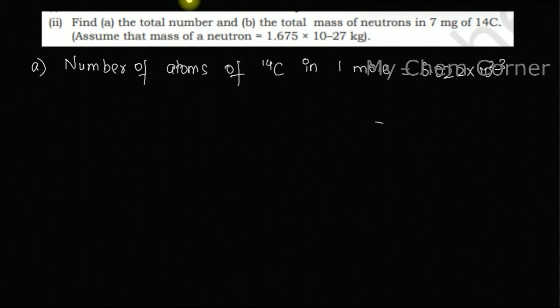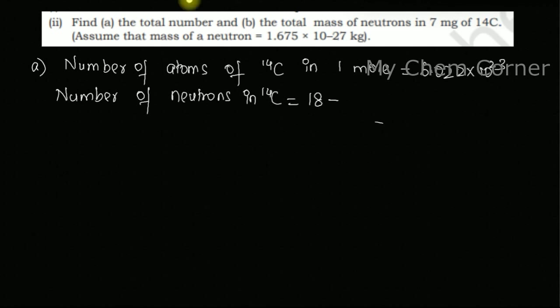Now, the number of neutrons in Carbon-14 — the atomic mass is 14, and carbon's atomic number, or number of protons, is 6. So when I subtract: 14 minus 6, I get 8 neutrons per atom of Carbon-14.